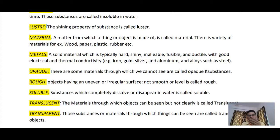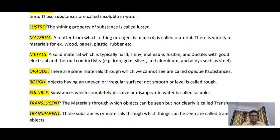Metals are fusible and ductile — you can make many items by beating and heating them. They have good electrical conductivity, so current can flow through them, and good thermal conductivity for heat transfer. These are all the characteristics of metals. Examples include iron, gold, silver, and aluminium.